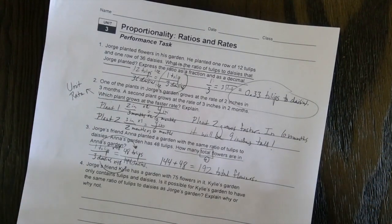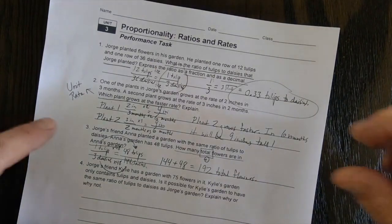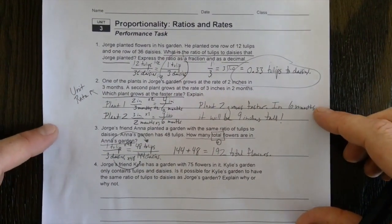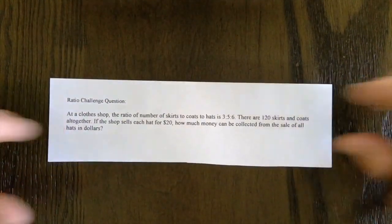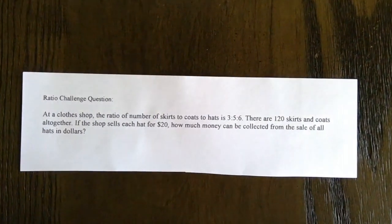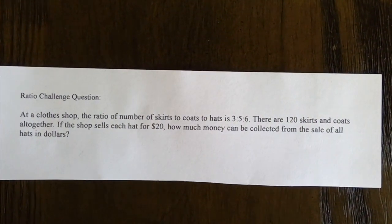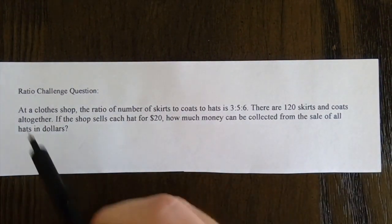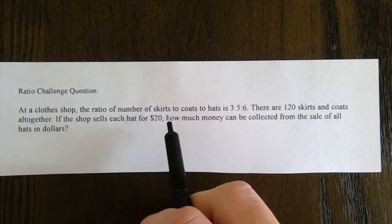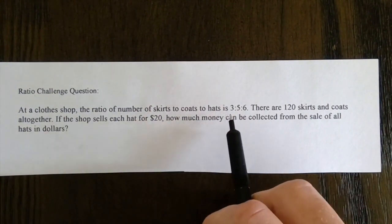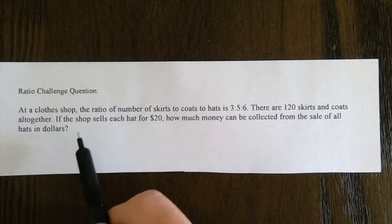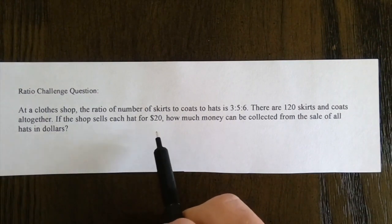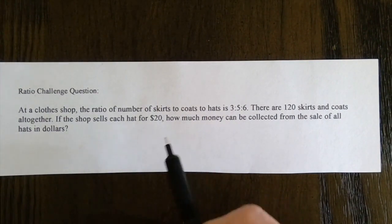What I'd like to do today is introduce you to a new challenge problem that you can work on yourself over the week and get the answer to next week. Our new ratio challenge question says: at a clothes shop, the ratio of number of skirts to coats to hats is 3 to 5 to 6. There are 120 skirts and coats all together. If the shop sells each hat for $20, how much money can be collected from the sale of all hats in dollars?